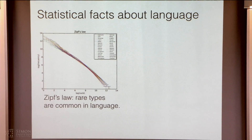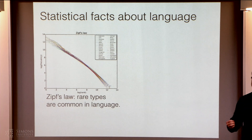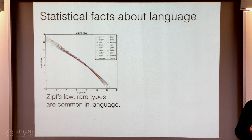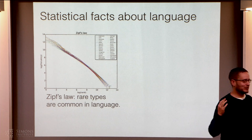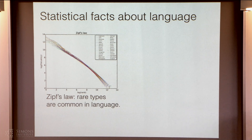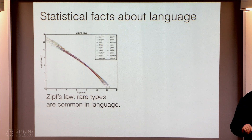I'm going to start off with a couple of statistical facts about language. I often get up and give these talks and say, oh, there are all these things we know about language that linguists tell us. Then I show trees and the machine learning people go to sleep. So today, I'm going to talk about statistical facts, things that you can go out and look at a lot of data and just can't really argue with.